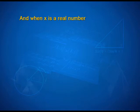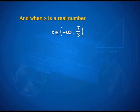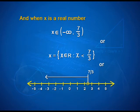When x is a real number, the answer expressed as an interval is x ∈ (−∞, 7/3), open on both ends. In set form: x ∈ ℝ such that x < 7/3. On the number line, a hollow circle at 7/3 with the arrowhead pointing left, because we are marking all x strictly less than 7/3.